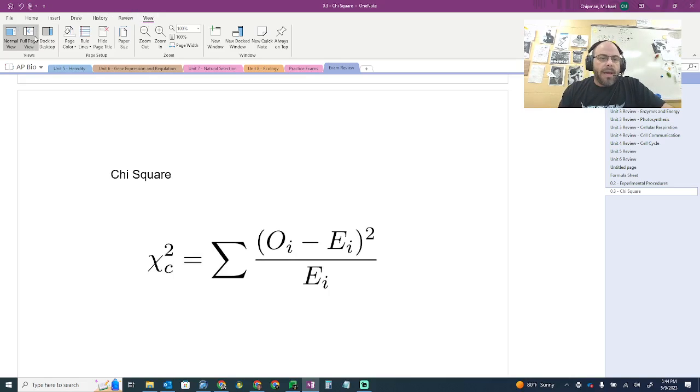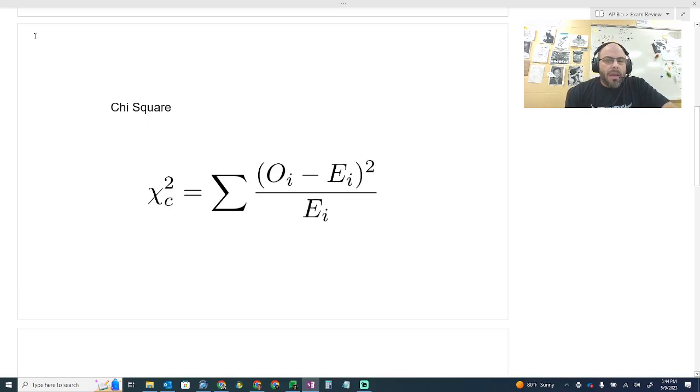Hello, my name is Mr. Chippen. I'm the AP biology teacher at Murray High School in Murray, Kentucky. And this is the night before the AP exam. Some of you are probably a little concerned, so we're going to go over some chi-square. This is one of the things my students asked me to go over with them, just to double check the night before the test.